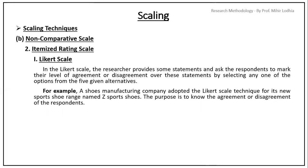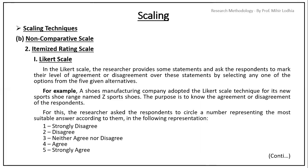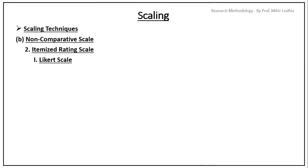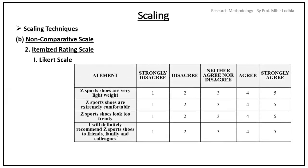Example, a shoes manufacturing company adopted the Likert scale technique for its new sport shoes range named Z-Sport shoes. Here, the purpose is to know the agreement or disagreement of the respondents. For this, researcher has asked the respondents to circle a number representing the most suitable answer according to them. From strongly agree number one to strongly disagree number five. Customers have given their answers. You can see on the diagram.